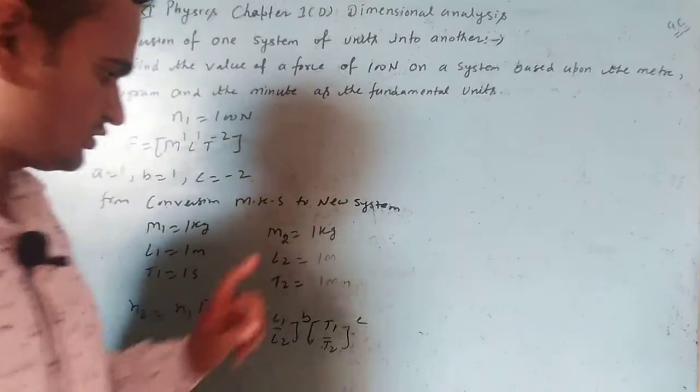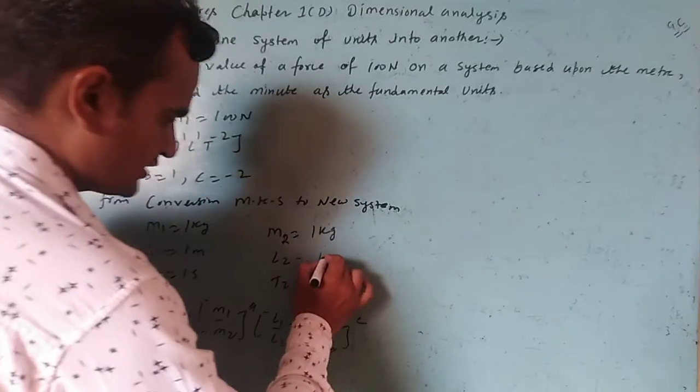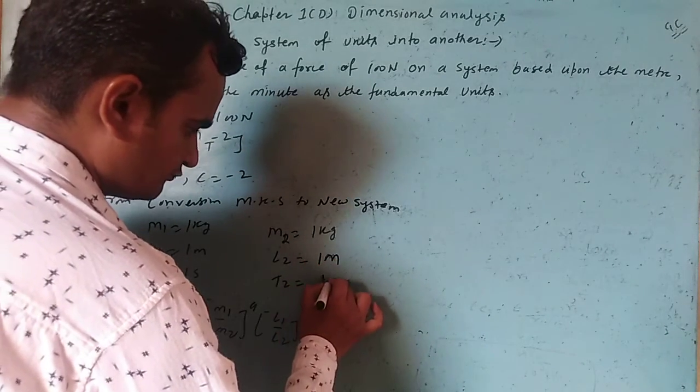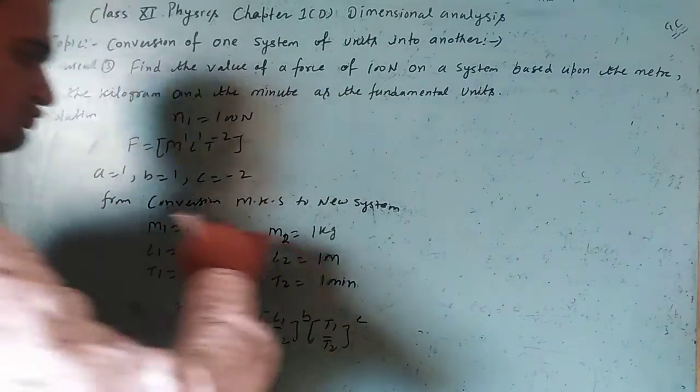The new system has M2 = 1 kilogram, L2 = 1 meter, T2 = 1 minute.